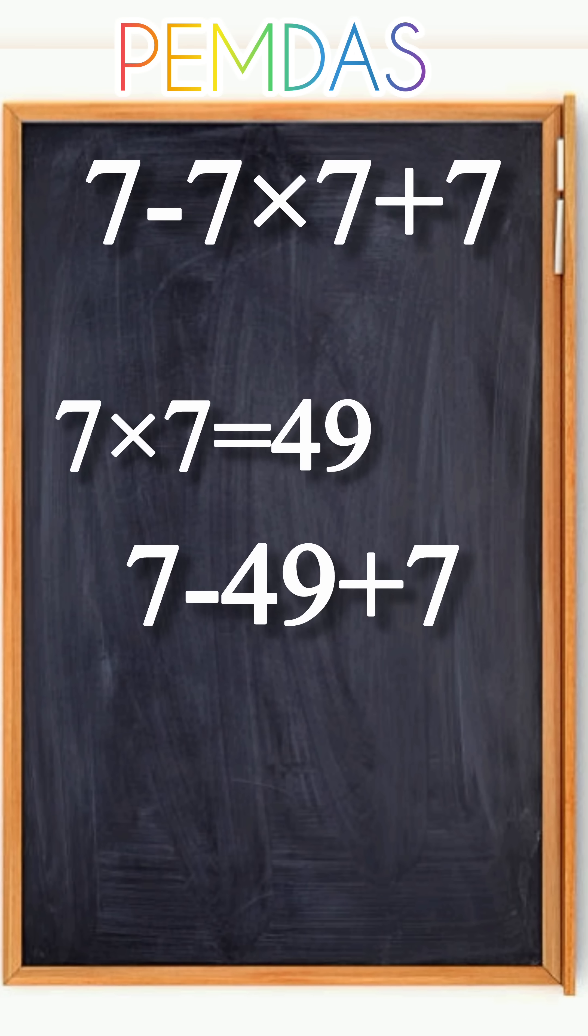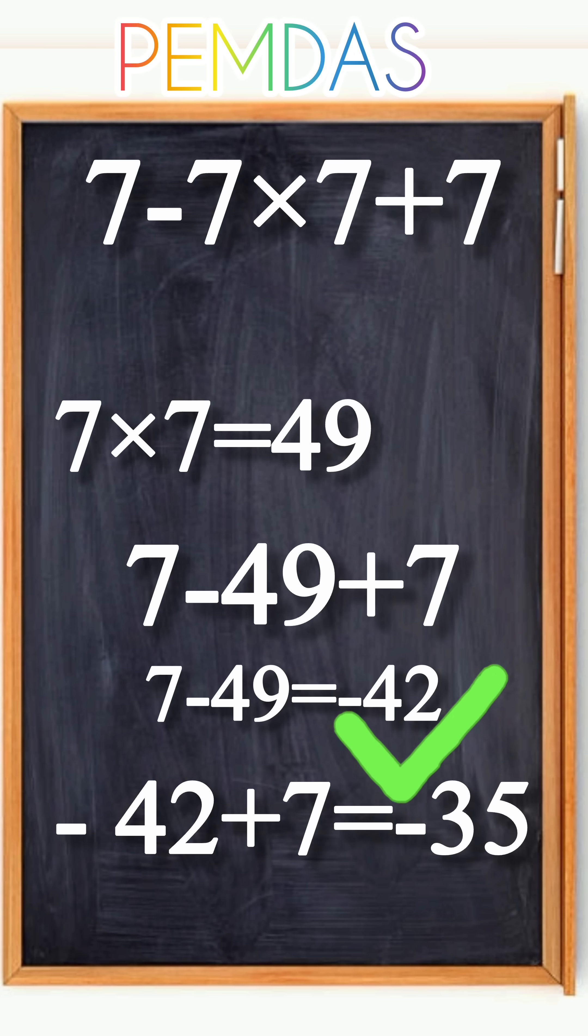Subtraction and addition are equal in rank, so we go left to right. 7 minus 49 equals minus 42. Then minus 42 plus 7 equals minus 35. And this is the correct answer: minus 35.